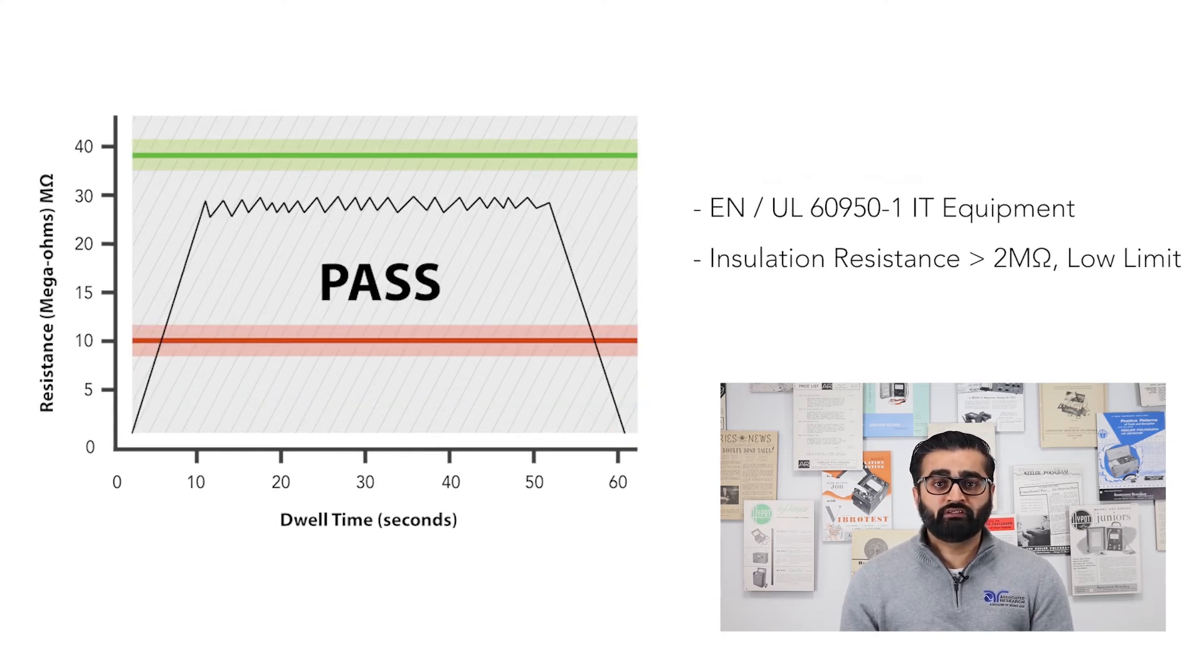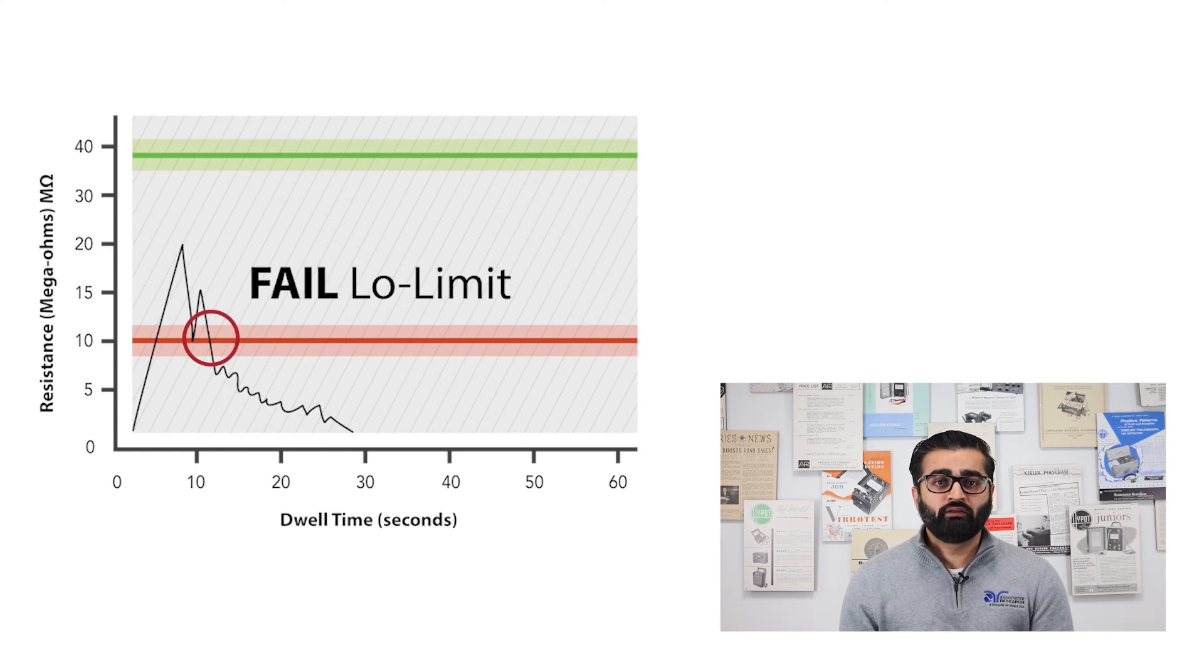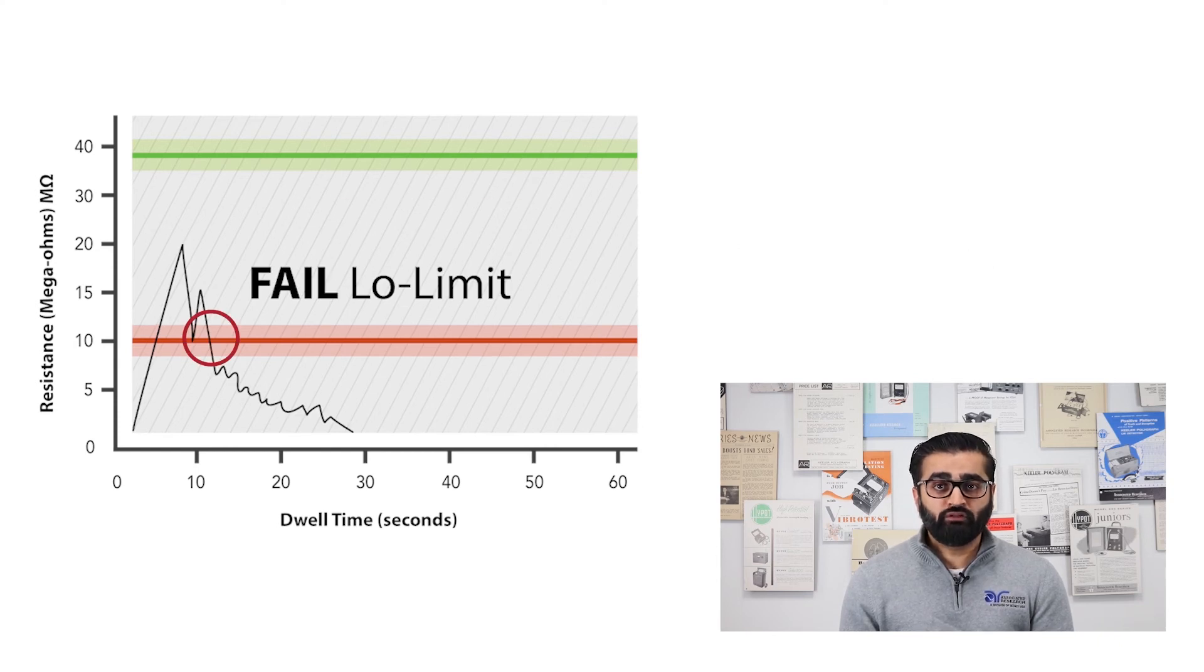Next, let's take a look at insulation resistance test. UL60950-1 IT equipment standard requires that the insulation resistance value be at a minimum 2 megaohms. Since we are given a minimum value to meet, the low limit parameter becomes a gauge for passing or failing a test. The IR value must exceed a minimum value in order to consider a pass. If an IR value falls below this low limit during the test, the test equipment will display a low limit failure, and this is considered to have failed the insulation resistance test.